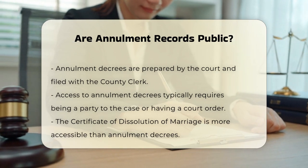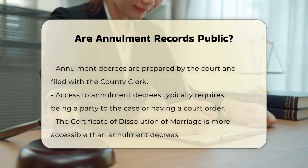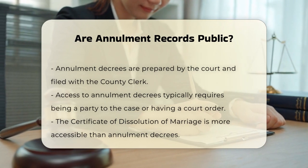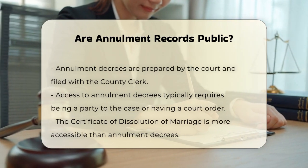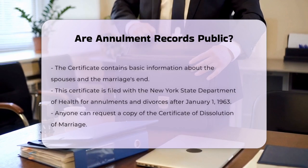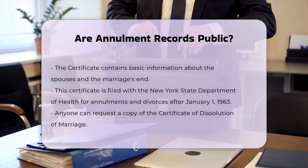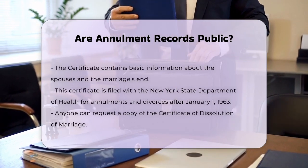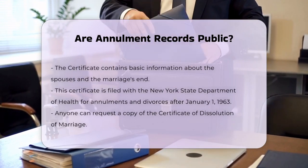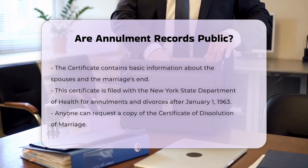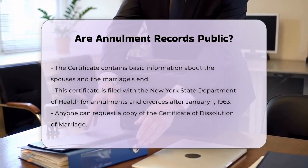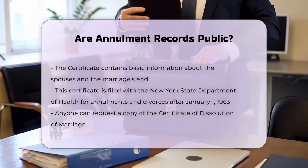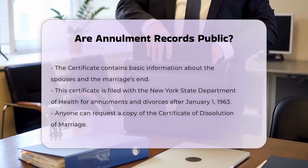There is another document related to annulments and divorces that is more accessible: the Certificate of Dissolution of Marriage. This certificate contains basic information about the spouses and the date and place the marriage ended. It is filed with the New York State Department of Health for annulments and divorces granted on or after January 1, 1963. Anyone can request a copy of this certificate, but it does not include the detailed terms of the annulment.